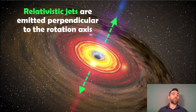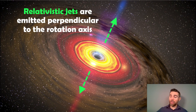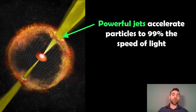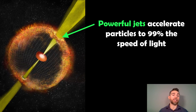As that accretion disk forms, you end up with relativistic jets being produced perpendicular to the rotation axis. This accretion disk is really what causes the hypernova — it powers these powerful perpendicular jets which are relativistic, meaning the emitted jets are traveling close to the speed of light, almost at the maximum velocity they can be. Those powerful jets accelerate particles to about 99% of the speed of light, and that's where the very high kinetic energy of a hypernova comes from in comparison to a supernova. The jets penetrate through the ejecta and we can then observe them.